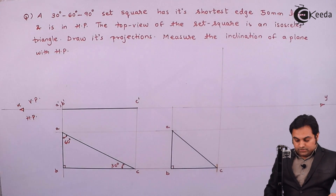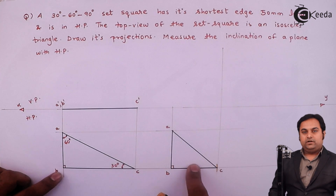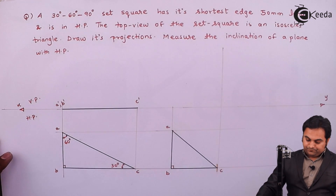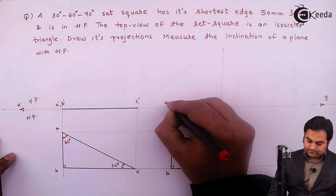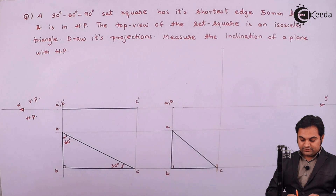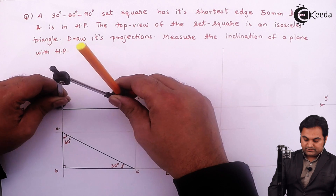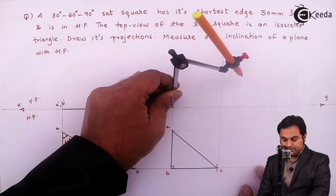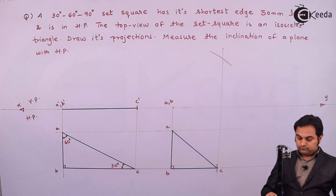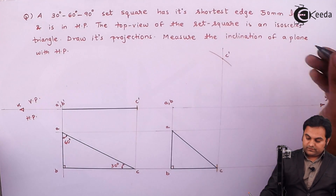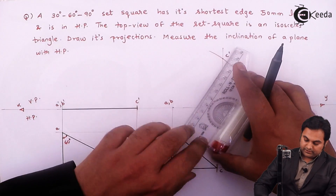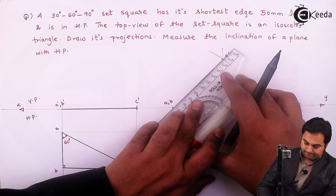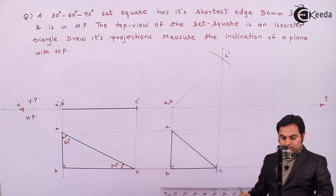Next I need to find the inclination of this set square. This set square we are seeing is not the true shape — it is the apparent shape obtained when the set square has been tilted. So here I'll take points A-dash and B-dash, then measure the distance from A-dash B-dash up to C-dash. Keeping this point here and cutting this line gives C-dash. Joining them with a light line, then making it dark.